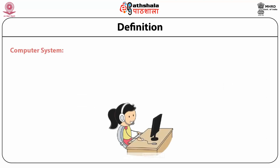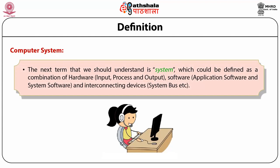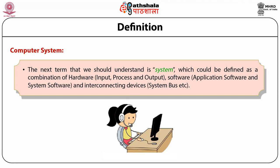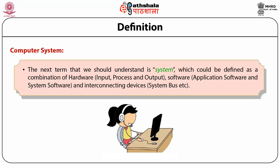A computer system is defined as a combination of hardware — input, process, and output — software including application and system software, and interconnected devices and system buses. In simple terms, a computer system is made up of three things: first, the CPU or Central Processing Unit.